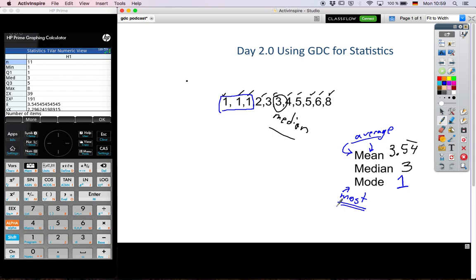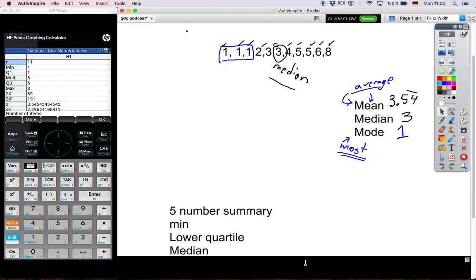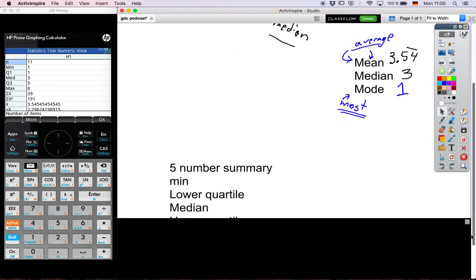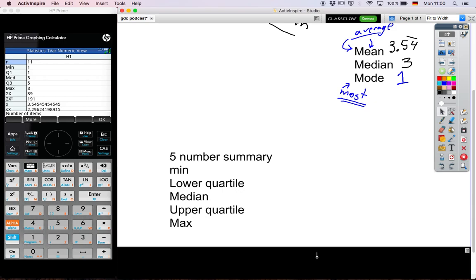Very good. So what else can we do with this calculator? Well, if you scroll down, there's a lot more information that's on there, but we're not going to use all of it today. But you'll notice something called Q1 and Q3, Minim Max. And those pieces of information, they're part of the five-point summary, which is really useful for making box plots. I like box plots. All right.